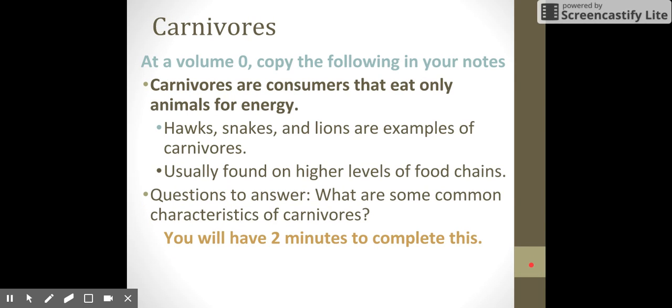Now carnivores are consumers that only eat animals as a source of energy. Making a big distinction here that they do not eat plants as a source of energy, they only eat animals. They're usually found on higher levels of the food chain. Snakes, hawks, and lions are examples of this. I mentioned cats earlier. They are specific in what they eat because they will only eat other animals, just like the herbivores will only eat plants. So our question here is what are some common characteristics among carnivores?